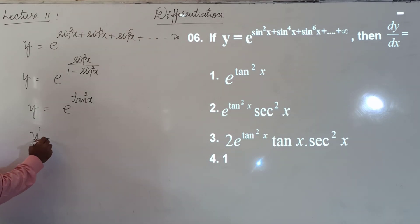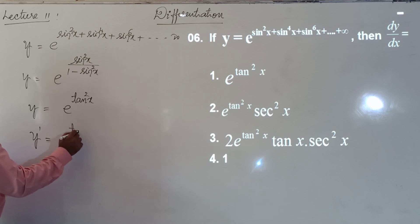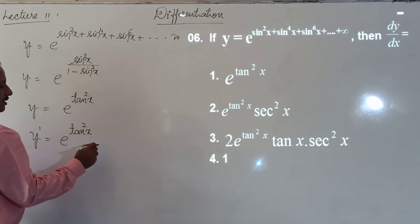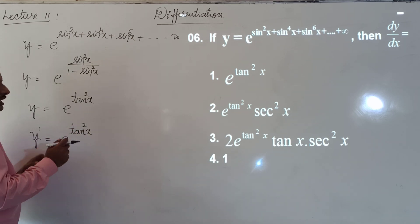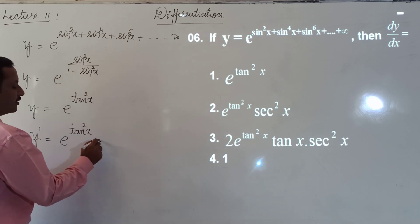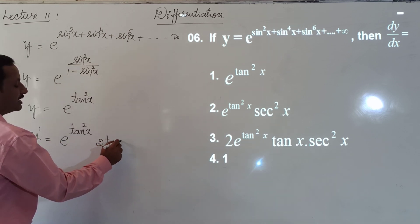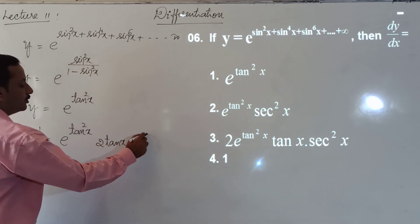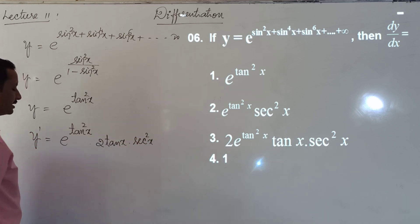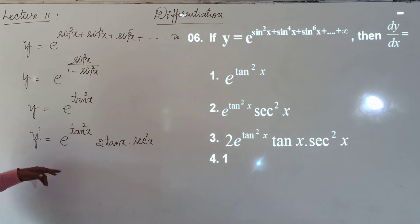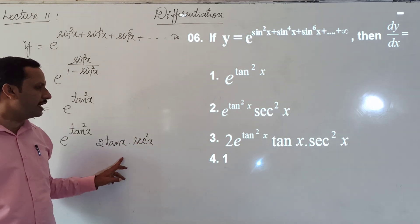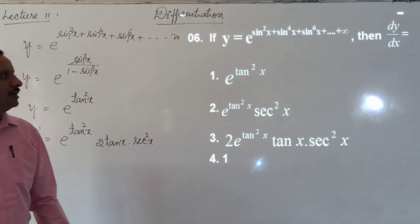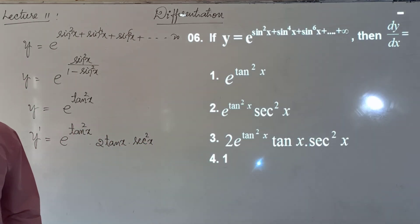Differentiating y = e^(tan²x): y' = e^(tan²x) · derivative of tan²x. The derivative of tan²x is 2·tan x·sec²x. So y' = e^(tan²x) · 2·tan x·sec²x, which is the third option.